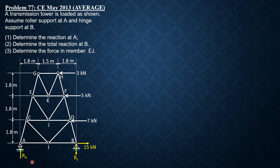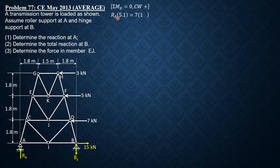The vertical reaction at B is downward and equal to RA. To solve for RA, we sum up moments about B for the whole system, clockwise positive: RA times (1.8+1.5+1.8) = RA times 5.1 equals 7 times 1.8 plus 5 times 3.6 plus 3 times 5.4.